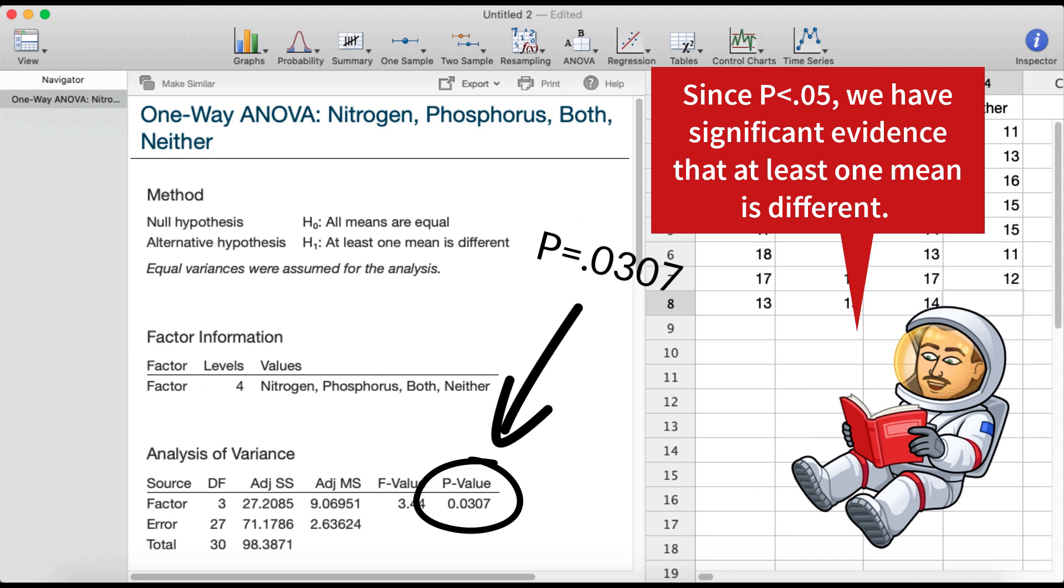And you see here we get a p-value of 0.0307, which means that at least one of the means is different, right? We have significant evidence that at least one of the means is different, and that's because our p-value is smaller than 0.05.